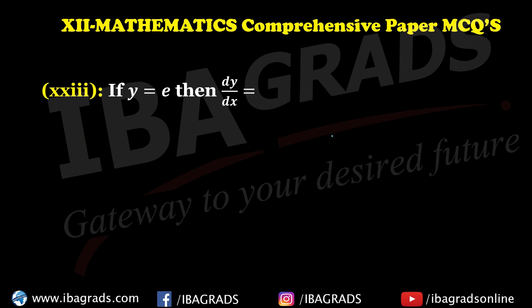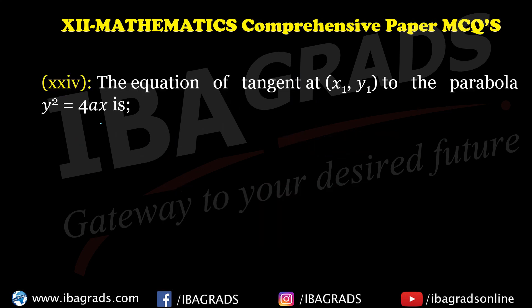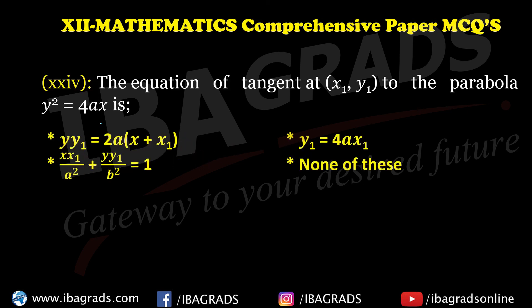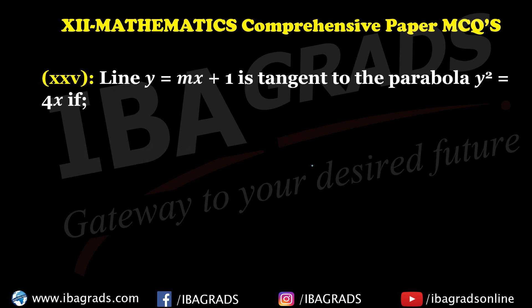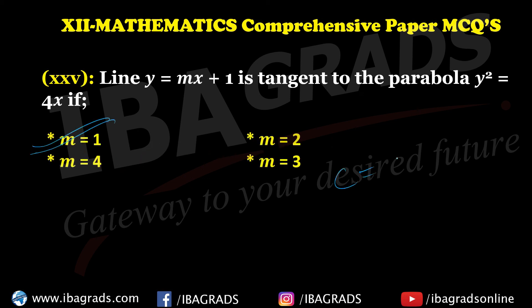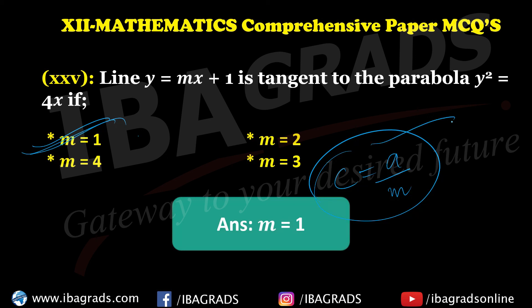इसके बारे में लिखा हुआ है — equation of tangent आपके पास मौजूद है। Equation of tangent यहाँ से निकाली जाएगी। The condition of tangency of a parabola: this is equal to 1 upon m — that is the key condition of tangency of a parabola.